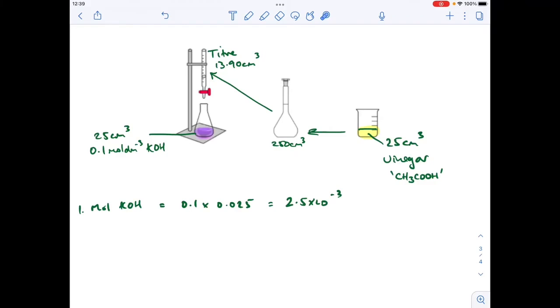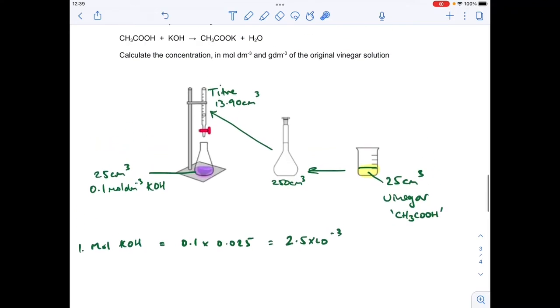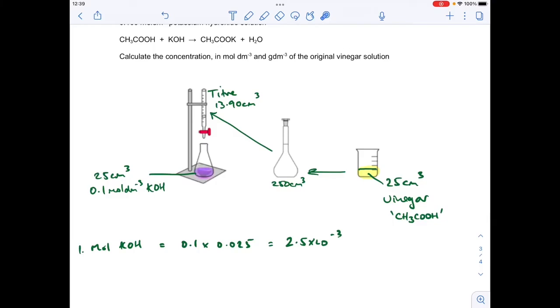The second thing we can do is work out the moles of the ethanoic acid. So we're assuming that the vinegar is just ethanoic acid. The information we need there is in the balanced chemical equation. It's a one to one ratio, so the moles of ethanoic acid in that 13.9 titer is going to be the same, 2.5 times 10 to the minus 3.